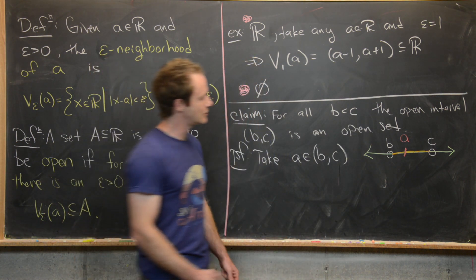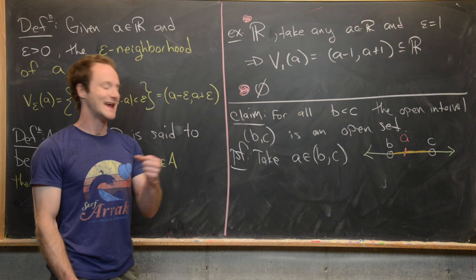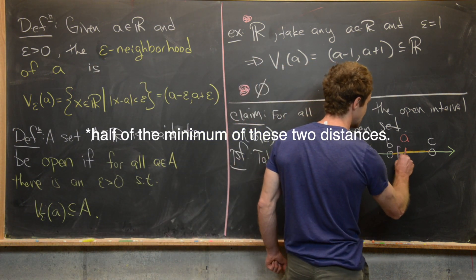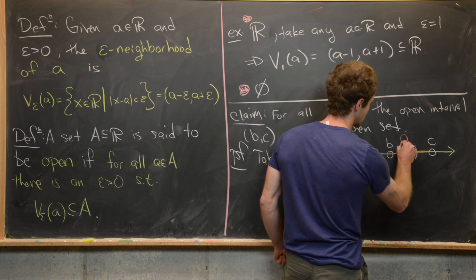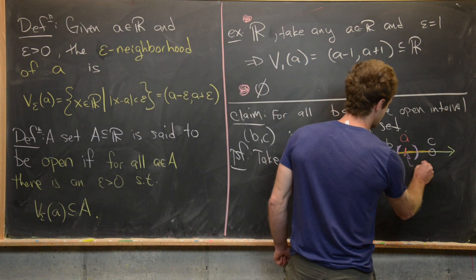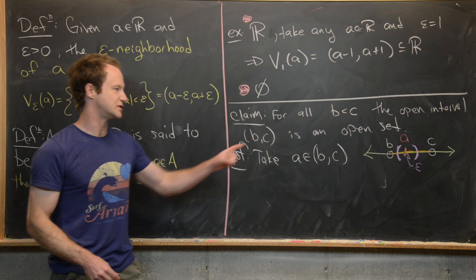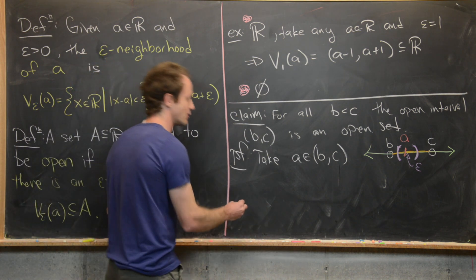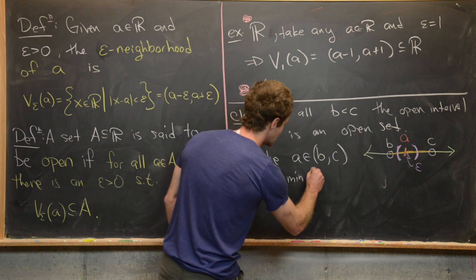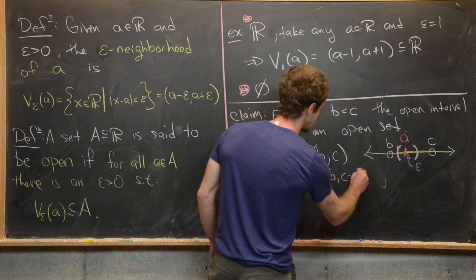We look at the distance from b to a and the distance from a to c, and take half of the smaller one. So we set epsilon equal to half the minimum of (a - b) and (c - a). Since a is bigger than b and a is less than c, we've got two positive numbers. We then claim that V_epsilon(a) is completely contained in the open interval (b, c).